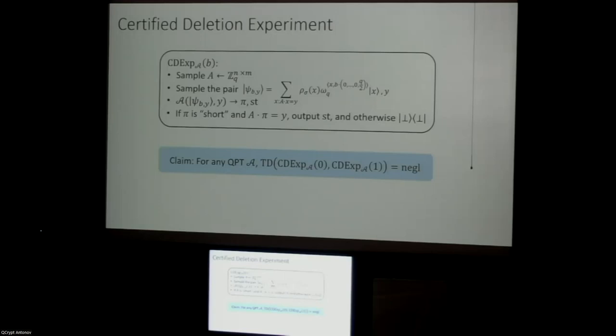What Alex essentially observed, and what we use in this work, is that it suffices to reason about a slightly simpler experiment involving the LTI hash function — literally just multiplying A by a short vector to produce the hash output. It suffices to prove the property we call certified everlasting Gaussian collapsing: whether we applied a standard-basis measurement to the state before giving it to adversary A, they shouldn't be able to notice that we did that.